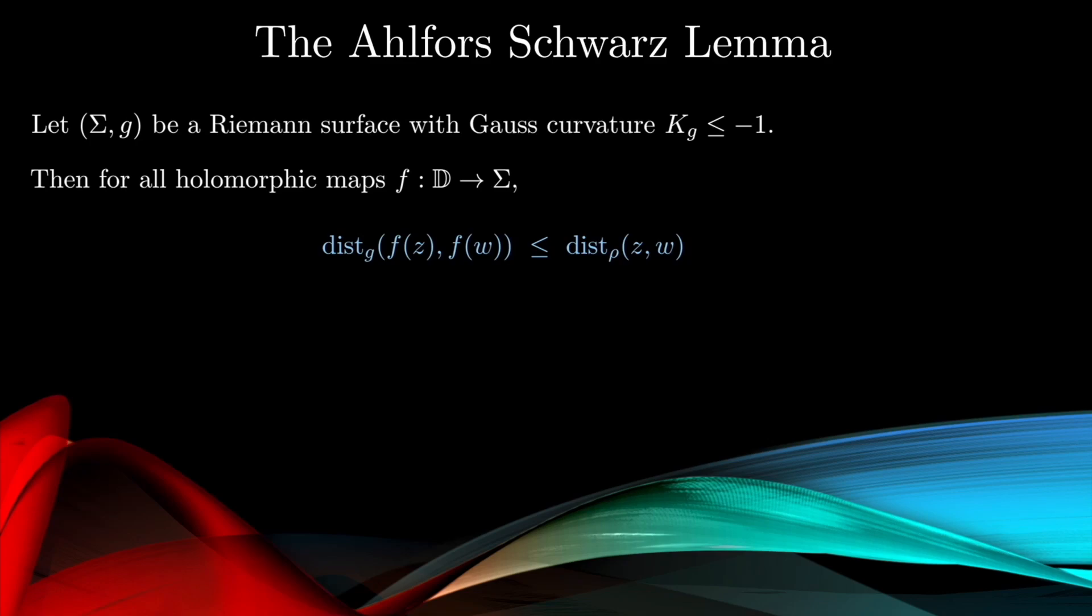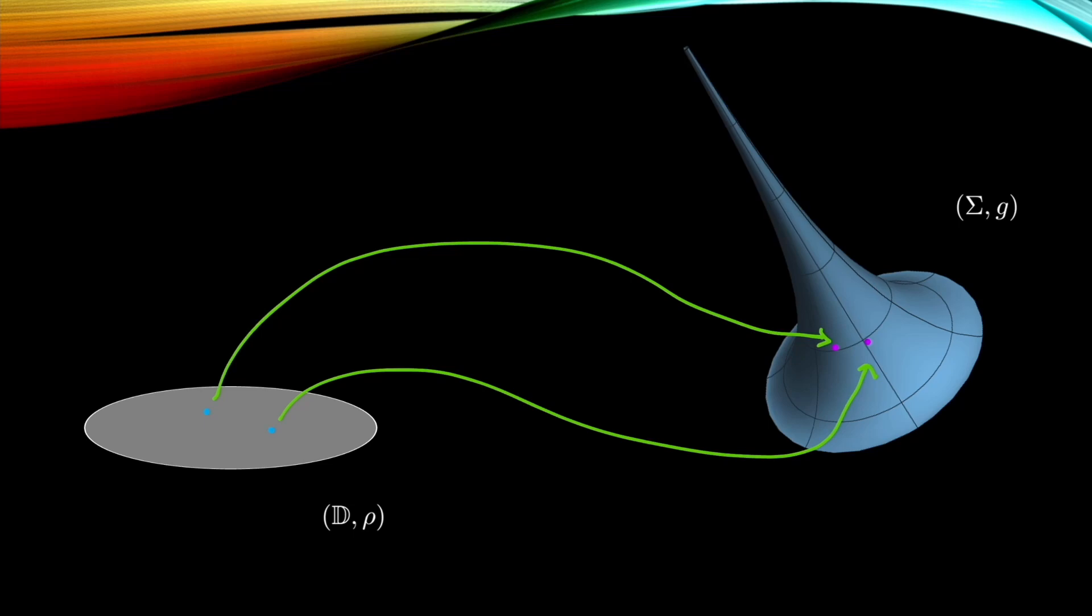—then any holomorphic map from the disk into this space is distance decreasing in this way. Namely, if you take the distance function with respect to this metric of negative curvature, then it does not increase relative to the Poincaré distance. So you have this image from the disk between two points, and when you map it in, there will be a contraction. Of course, this is not to do with Euclidean distance, it's the hyperbolic distance, so the picture can only save so much.